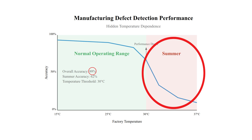The model's performance plummeted during summer heat waves. While these hot days only represented about 15% of operating time, they coincided with peak production season. During these periods, when factory temperatures exceeded 30 degrees, accuracy dropped to 62%, making the quality control system unreliable exactly when needed most.